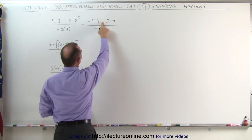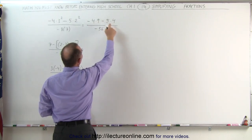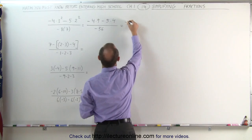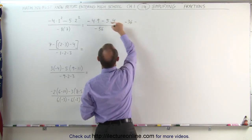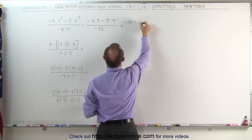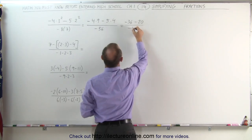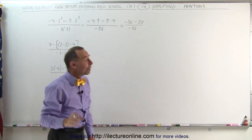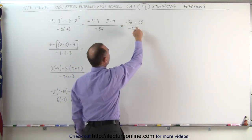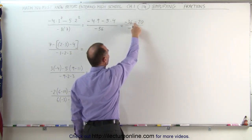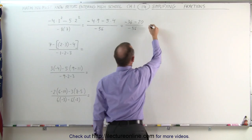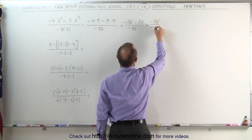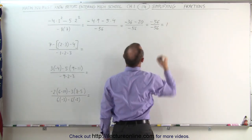Now, notice we have a subtraction and two multiplications, so let's take care of the multiplications first. Minus 4 times 9 is minus 36. Minus 5 times 4 is 20, divided by minus 56. Now we combine what's in the numerator. Don't be tempted to start simplifying here — we still have a negative sign and we're subtracting. Minus 36 minus 20 is minus 56, divided by minus 56, and that is equal to 1.